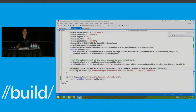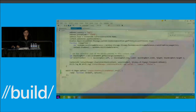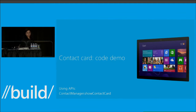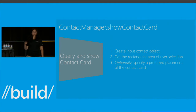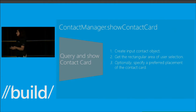Even though the demo code I'm showing is in JavaScript, these APIs are projected in C++ and C# as well. Quick recap: the ShowContactCard API is really simple — you create the contact object, provide the selection rect, and optionally a placement. That's it. Just three lines of code.